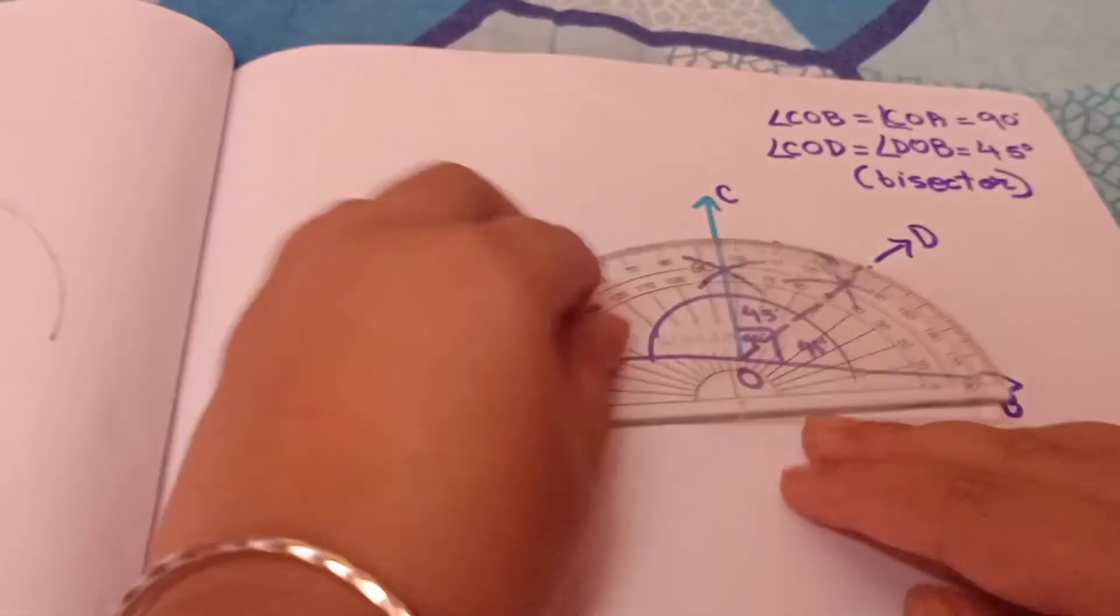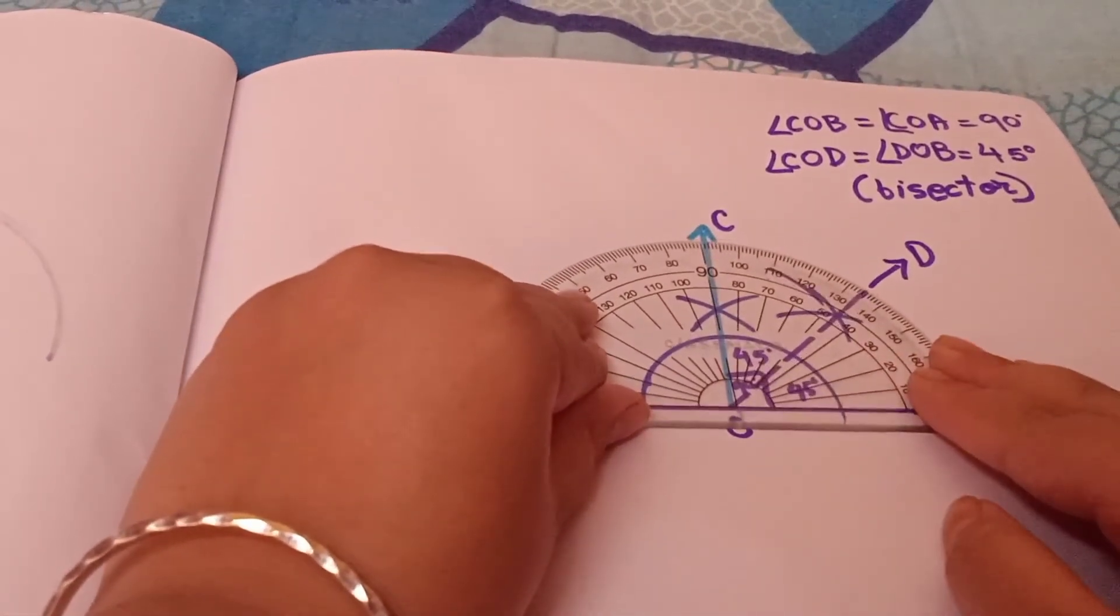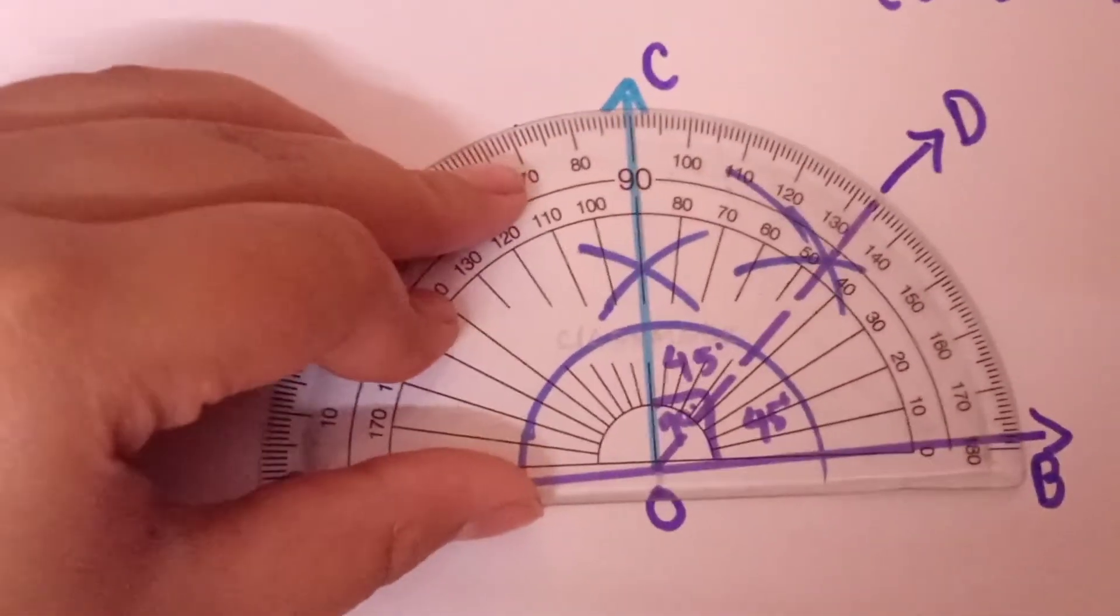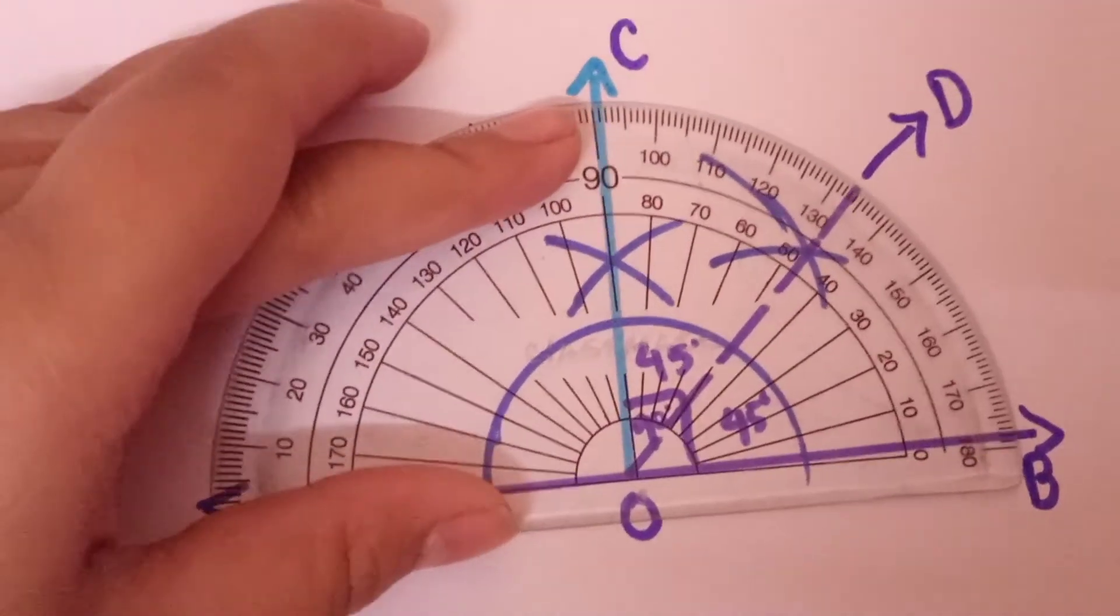Now we will check it with the protractor. So let's see if it's perfect or not. So yes guys, it's perfect. You can see it's perfectly done and it's 45 and there it is 90 degree.